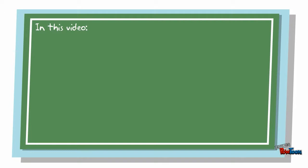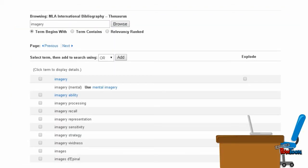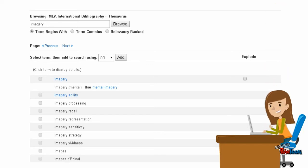Let's review. The thesaurus is used in a database to organize sources and help you, the researcher, retrieve more relevant results. Use this feature to translate your keywords into the appropriate terminology for the database. Keep it basic, or use the explode feature to open your search. The use of subject headings is a powerful and advanced searching tool. Penny still finds value in using keywords, but she has also found great value in learning the proper terminology for the database.